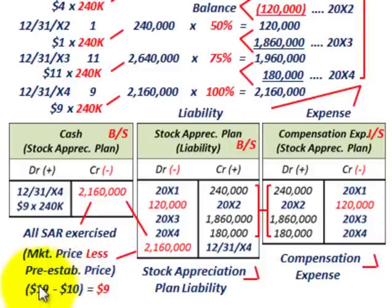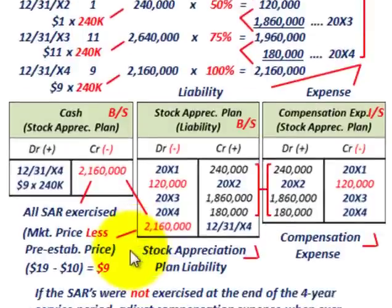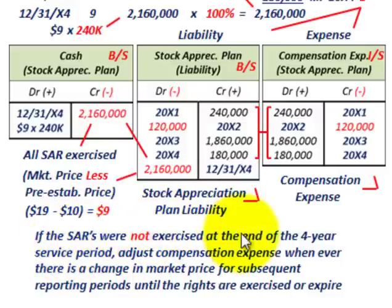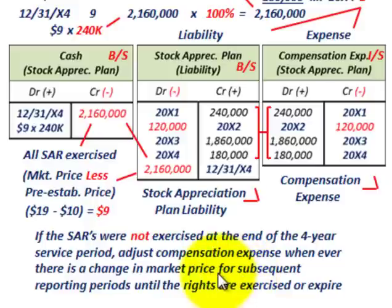Note that the $9 SAR value represents a market price of $19 per share less the pre-established price of $10 per share. If the SARs were not exercised at the end of the four-year service period, we would continue adjusting the compensation expense for changes in the market price during subsequent reporting periods — until the rights are exercised or expire. We would extend the fair value table into future years accordingly.